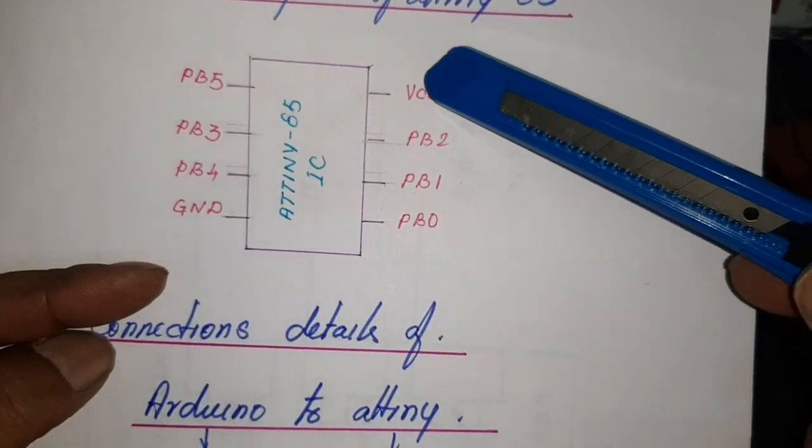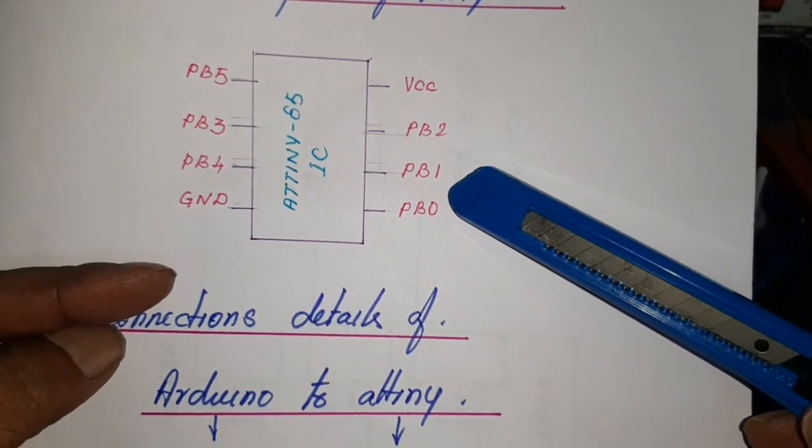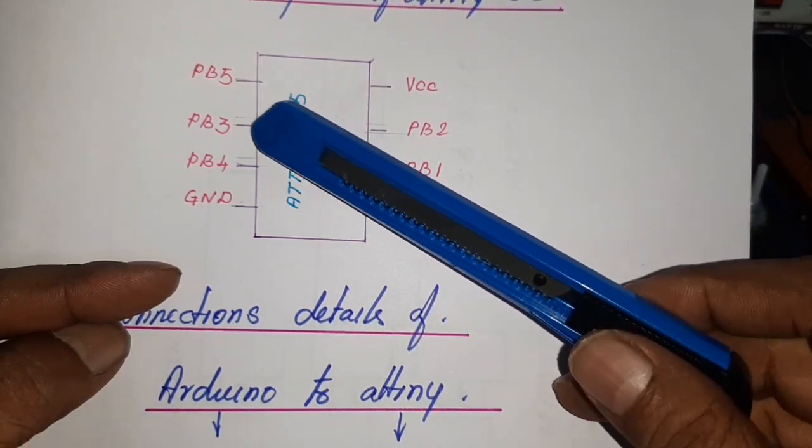Here, this is VCC and ground and PB1, PB0, PB2 and PB4, PB3.